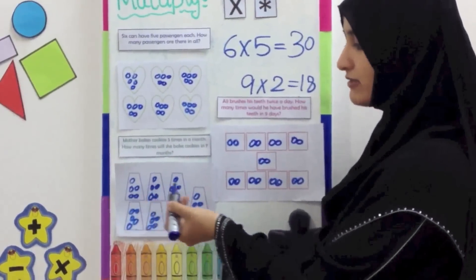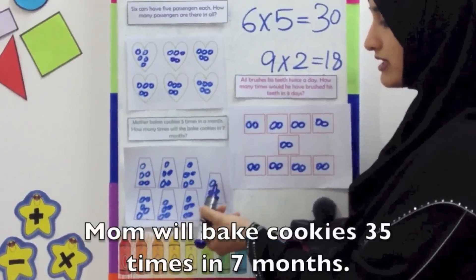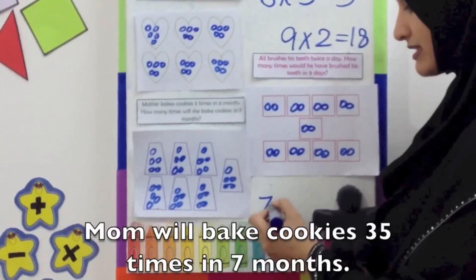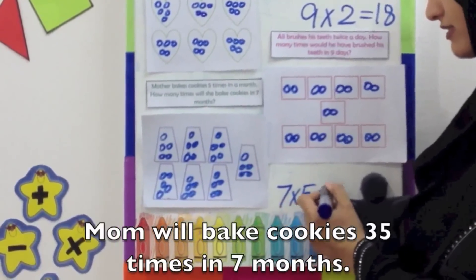Five, ten, fifteen, twenty, twenty-five, thirty, thirty-five. Seven times five makes thirty-five.